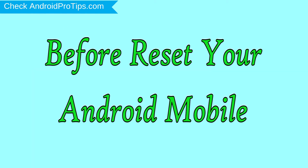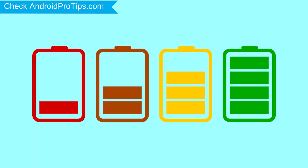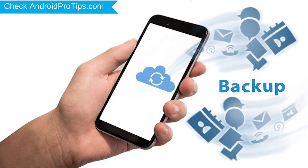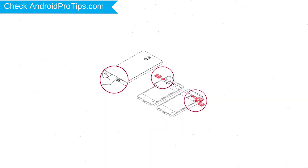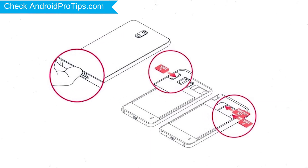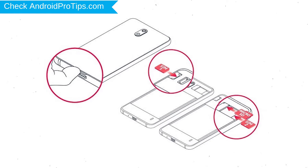Before resetting your mobile, charge your mobile if the battery is less than 50%. You need to make sure that the data on your device is backed up so you do not lose valuable photos or documents. Reset deletes all your mobile data, so you better back up all important data and remove SIMs and SD card.